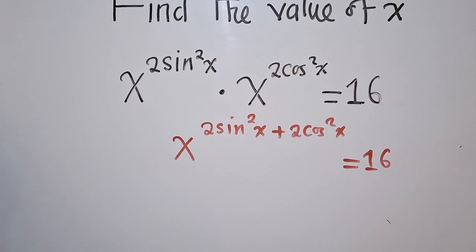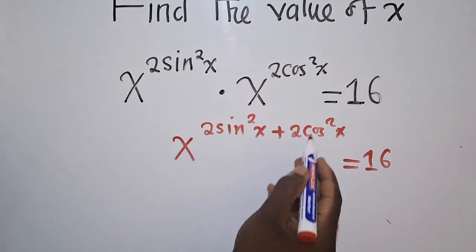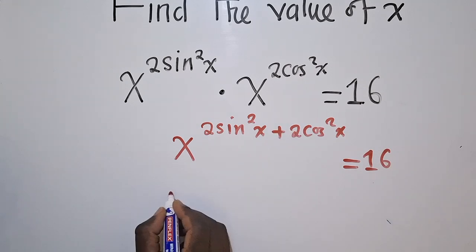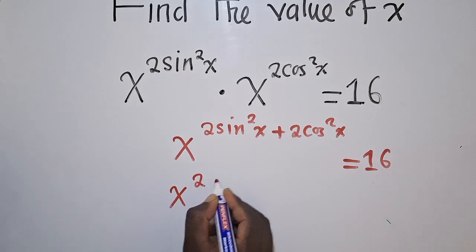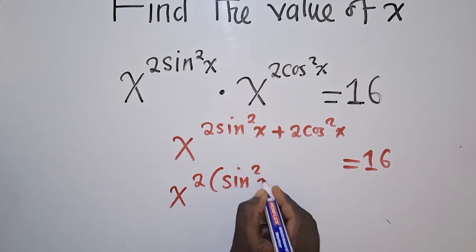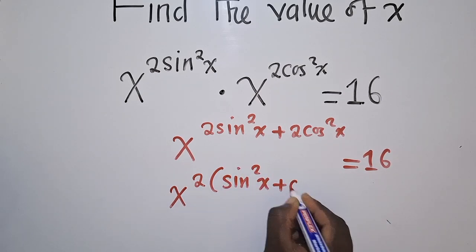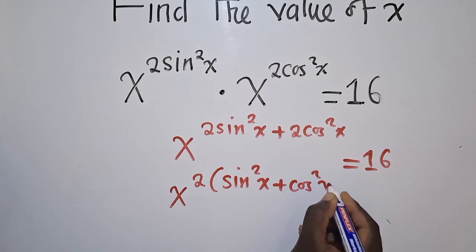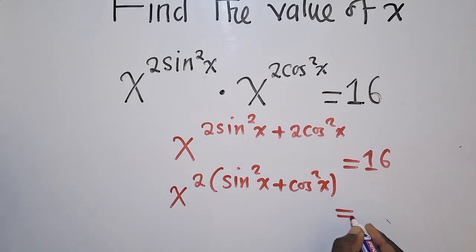X power 2 sine squared X plus 2 cos squared X is equal to 16. Now from this stage, we can simplify on top here. We shall have X power 2, open bracket, sine squared X plus cos squared X is equal to 16.